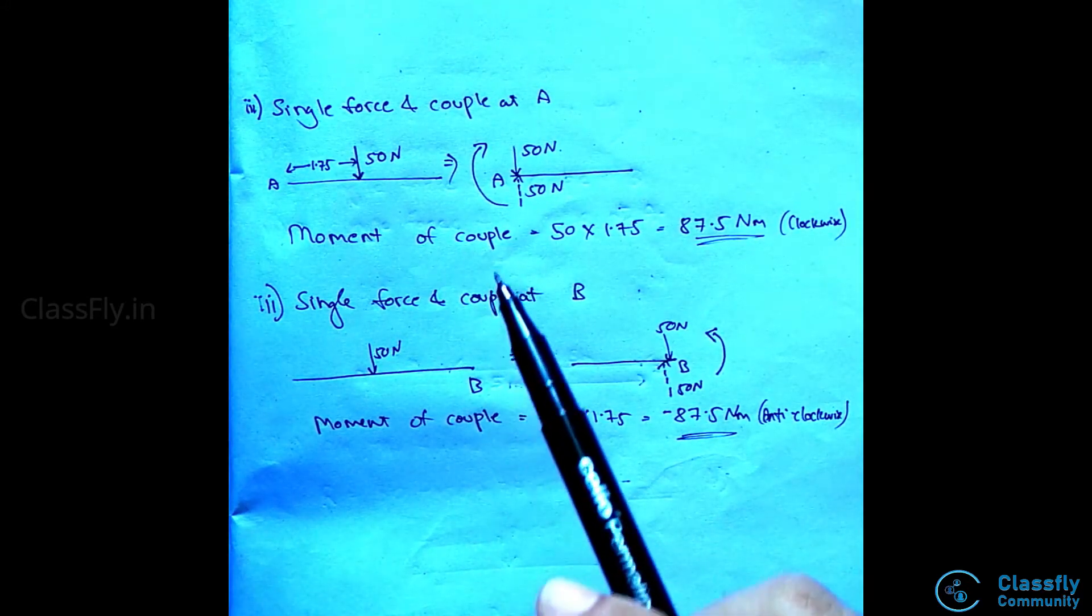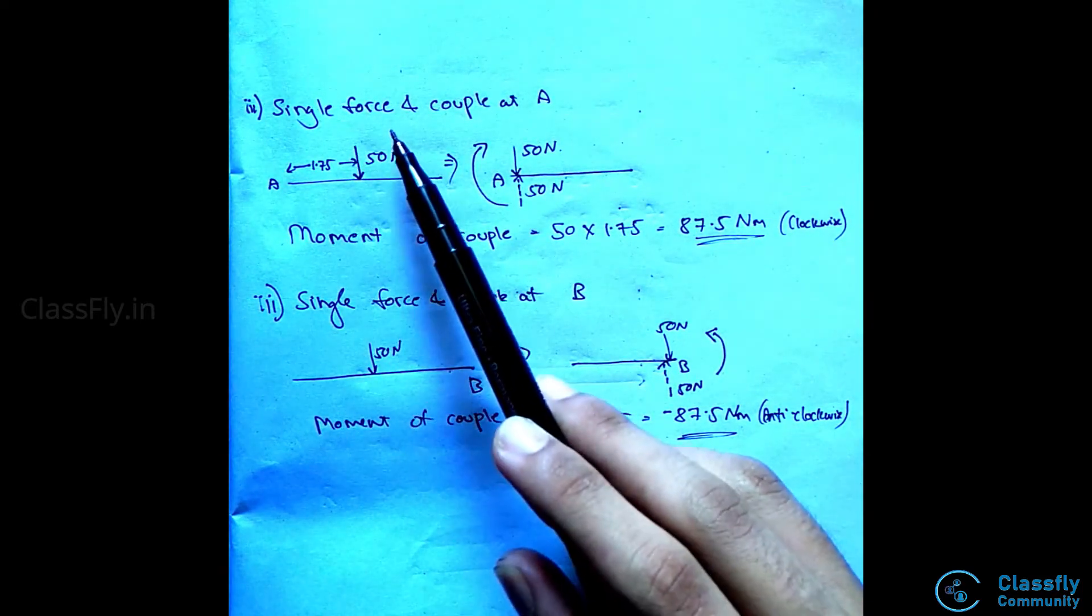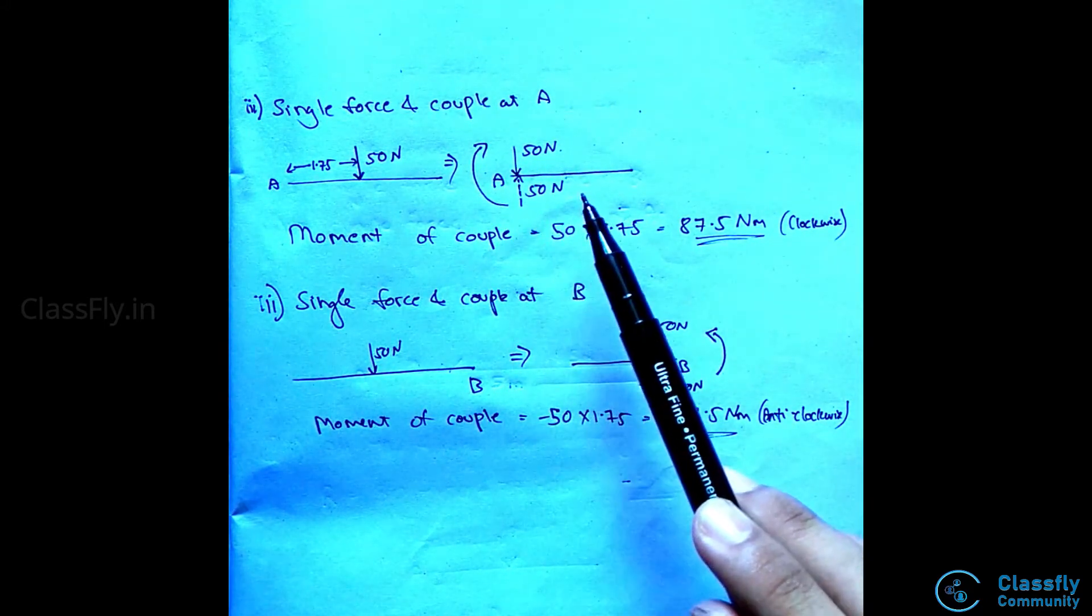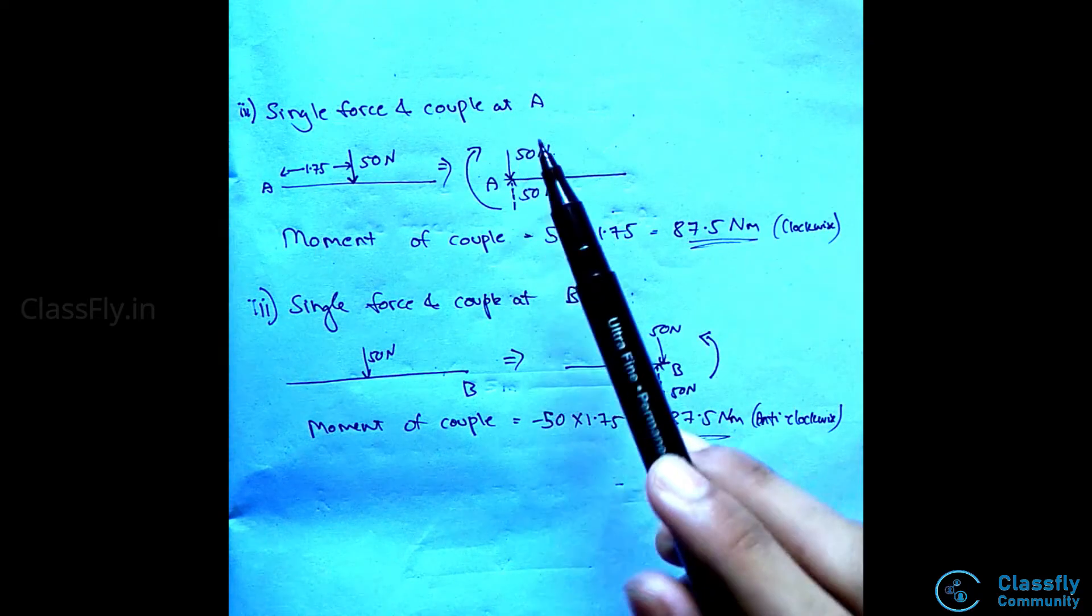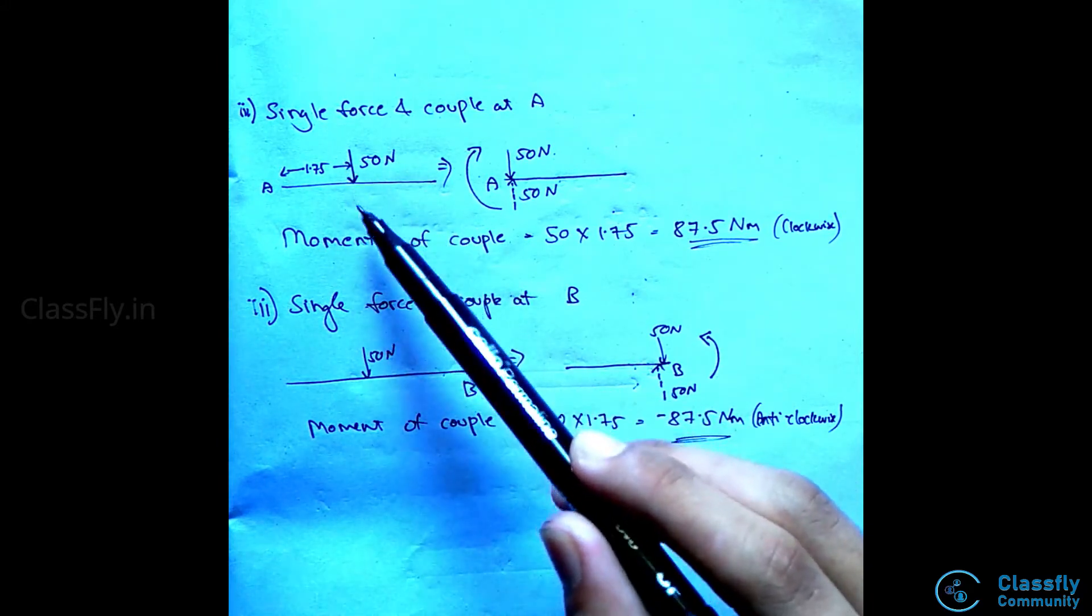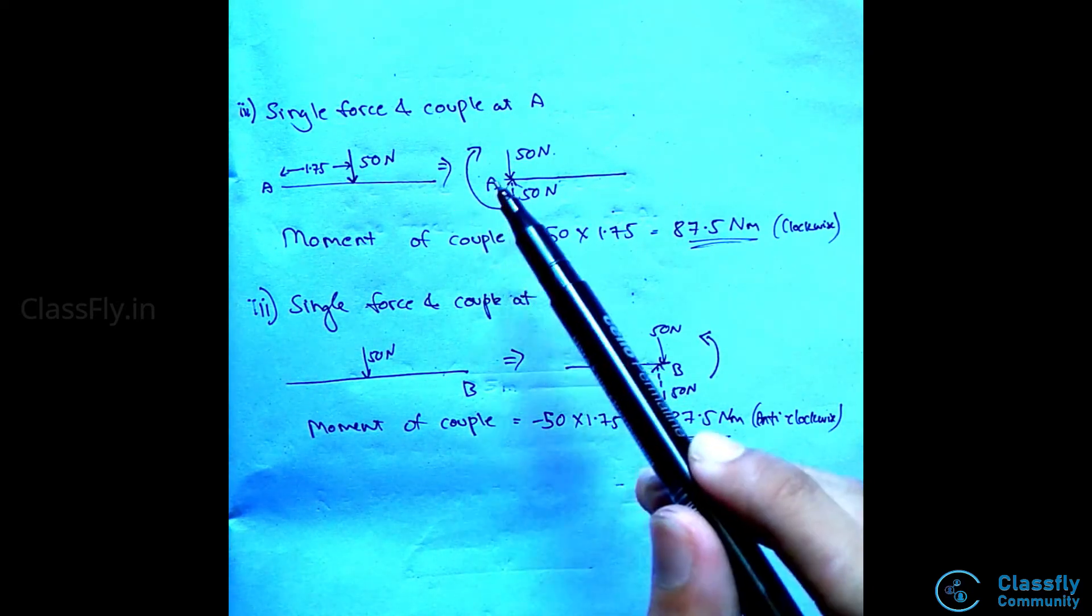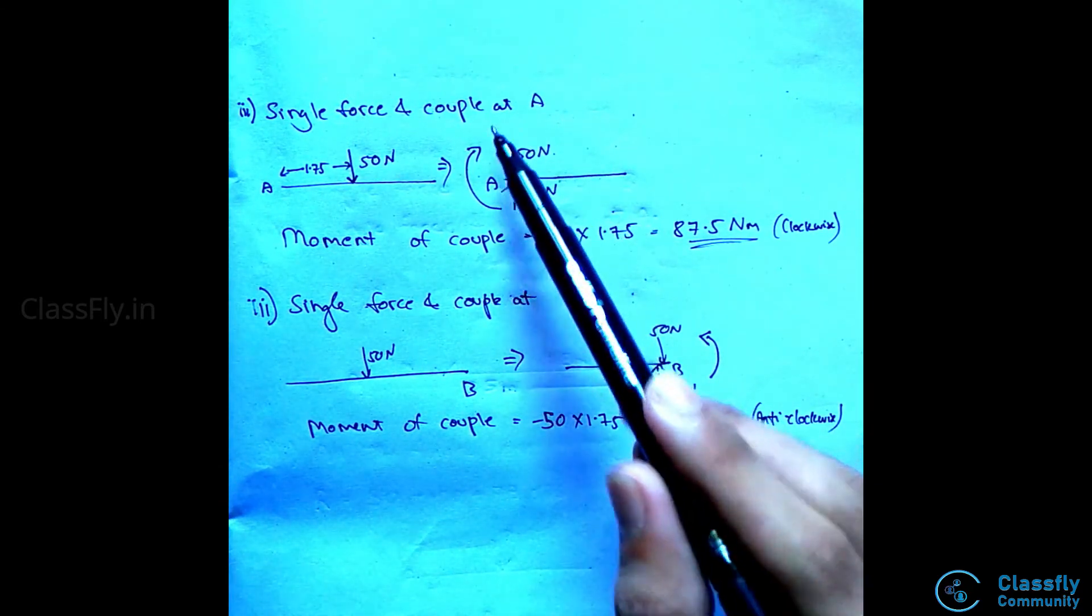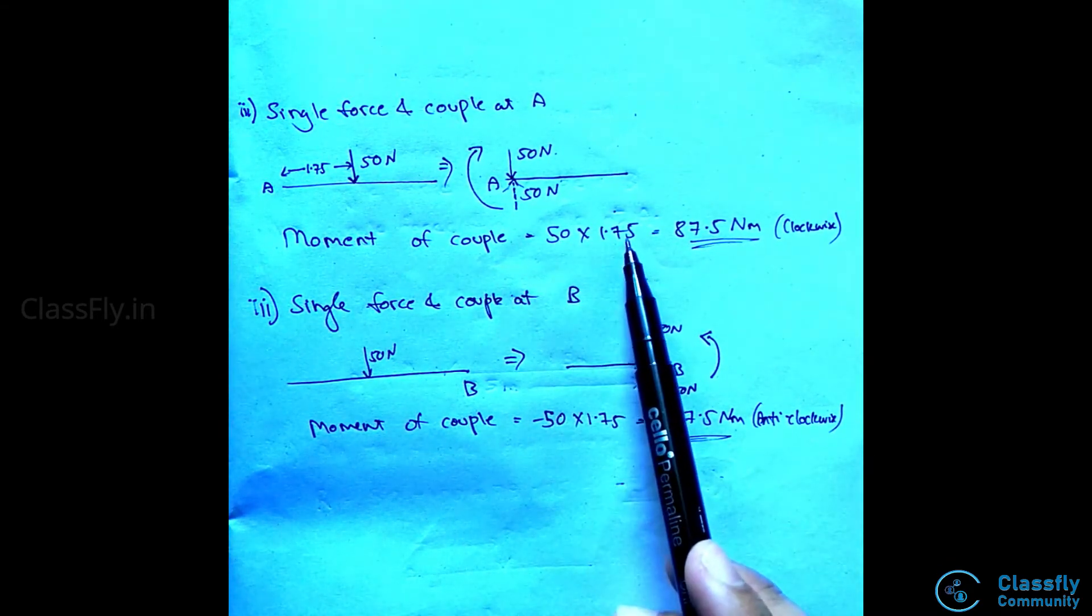They have asked us to find the single force and a couple at A. The single force will be the same as the resultant force and hence will be 50 Newtons. We know that couple is an equal and opposite force acting at that point. The couple can be found by introducing an equal and opposite collinear force at the point of the resultant. As the resultant is 50 Newtons acting downwards, the couple force will be 50 Newtons acting upwards. Couple possess some moment either clockwise or anti-clockwise.